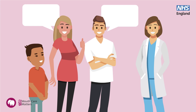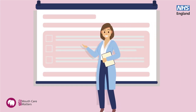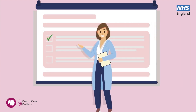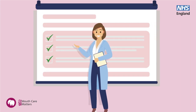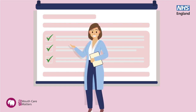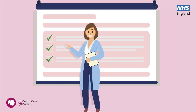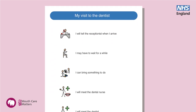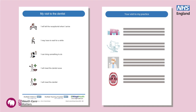Re-evaluating the service you are providing and recognising that it may not be accessible in the current format will help in suggesting adaptations. A social story is a short description with accompanying pictures to help a patient with a learning disability, autism or both, through a process. Here is an example of a social story about going to the dentist. This could be adapted for your practice to familiarise the patient in advance of the appointment.